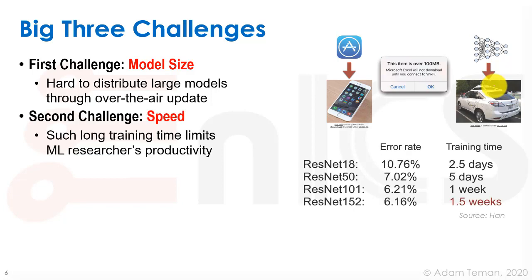The second challenge is speed. Long training times limit machine learning researcher productivity. Song Han trained different ResNet sizes to get different error rates using Torch with four M40 GPUs, and it took a long time. The more complex the model, the longer training takes. For inference on the edge, we want real-time or very fast updates, so speed is a big challenge.